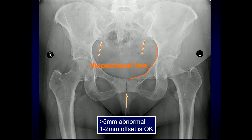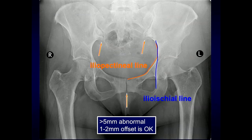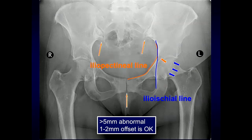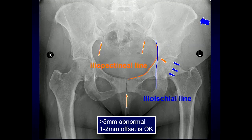Another line we can evaluate and closely scrutinize is the iliopectineal line — there should not be any discontinuities or offsets — as well as the ilio-ischial line. Additionally, we want to look through the femoral head and find that posterior wall of the acetabulum in comparison to the anterior wall, which can help you to look for posterior wall acetabular fractures. Don't forget about the iliac wings, looking for fractures in this location.